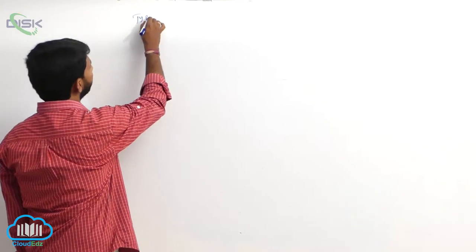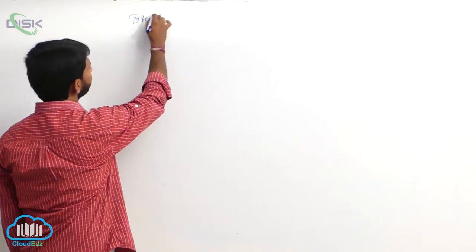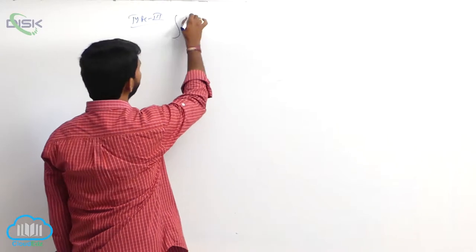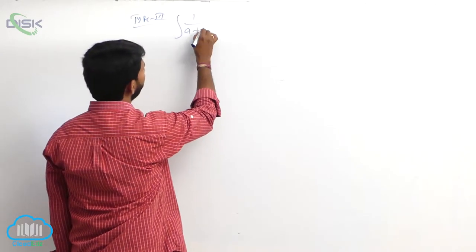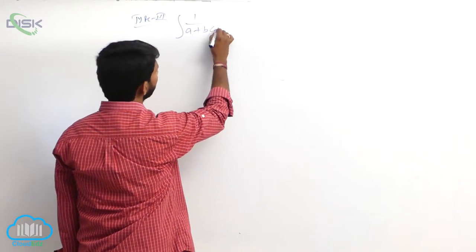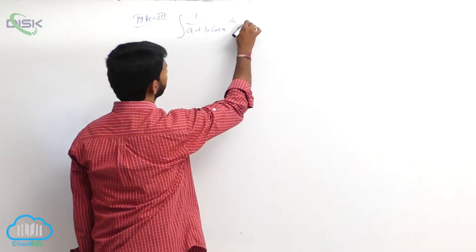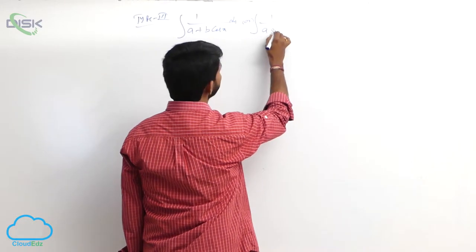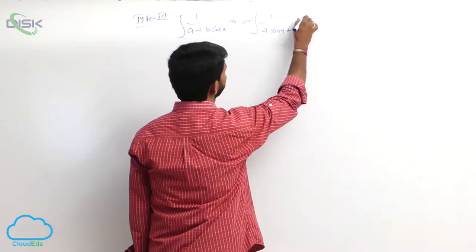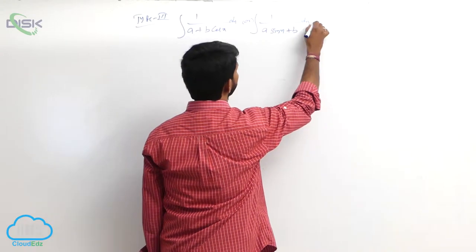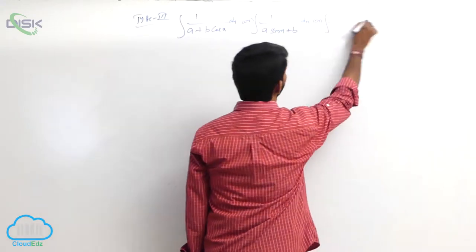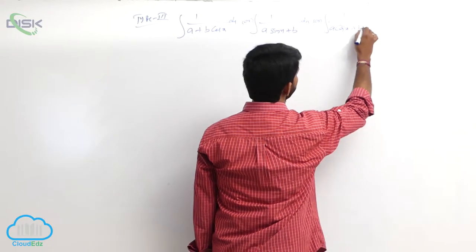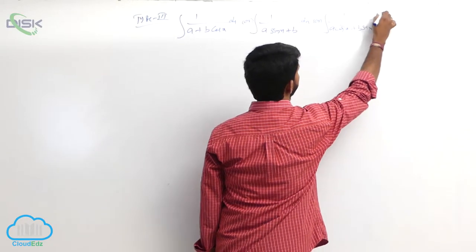Go to the third type, type 3. Any integral function is of the form: integral of 1 by (a plus b cos x plus c) dx, or integral of 1 by (a sin x plus b) dx, or integral of 1 by (a cos x plus b sin x plus c) dx.